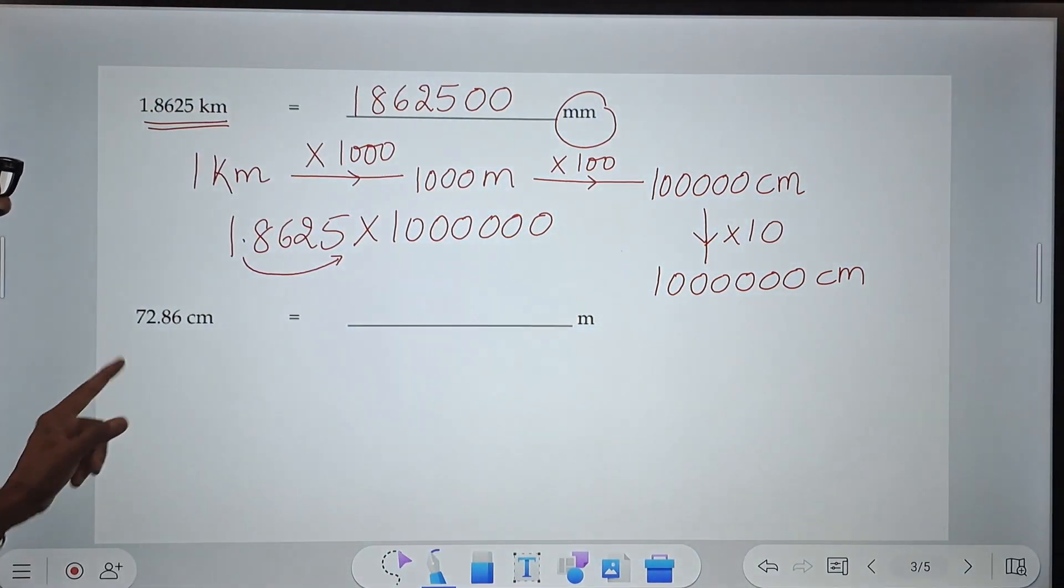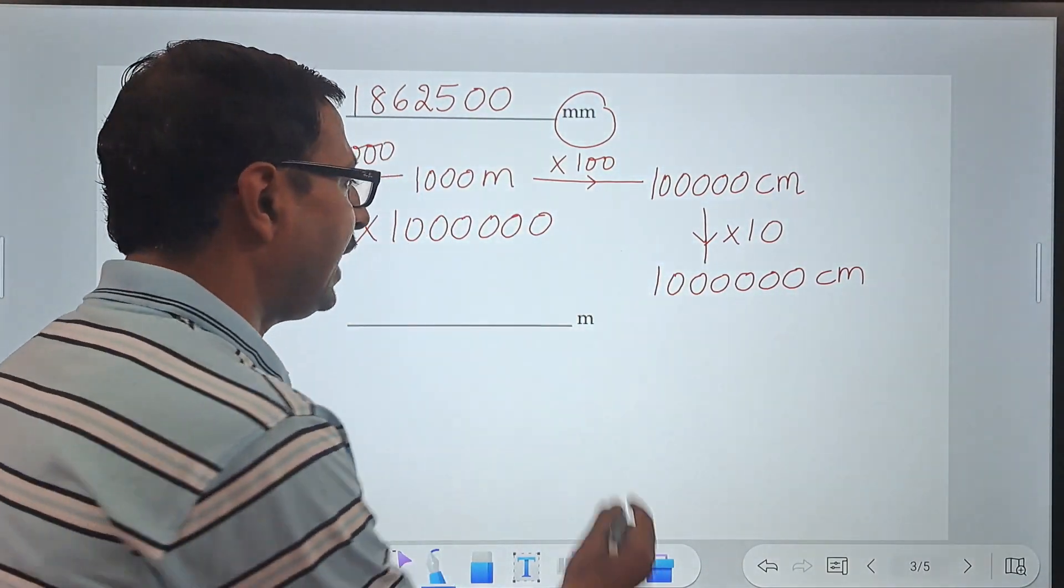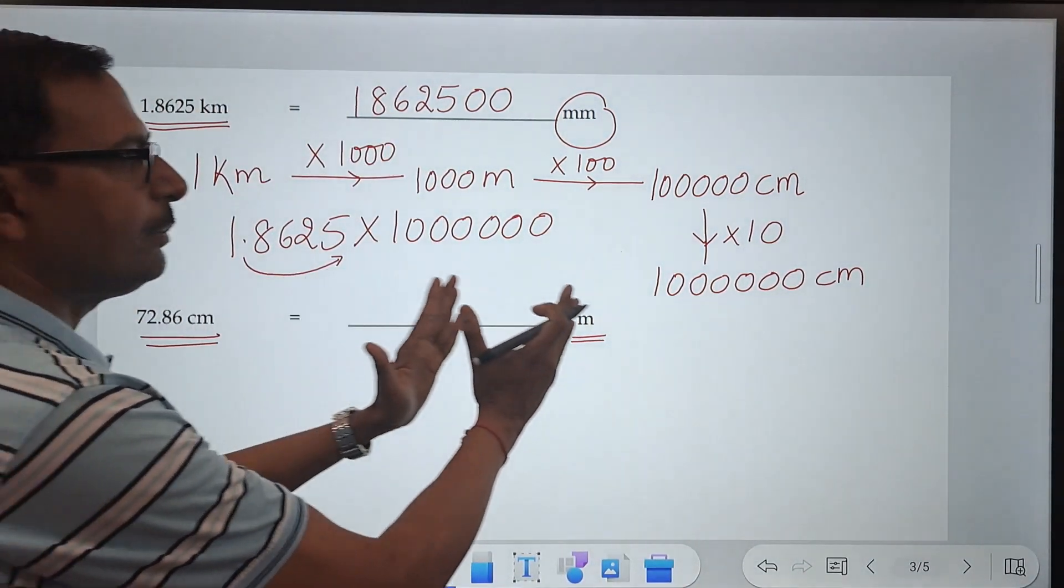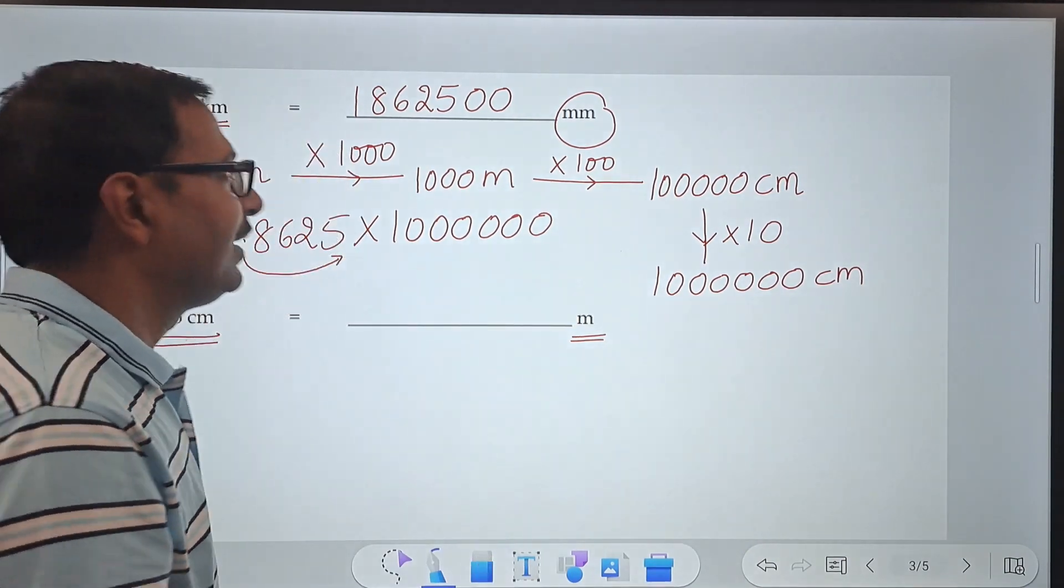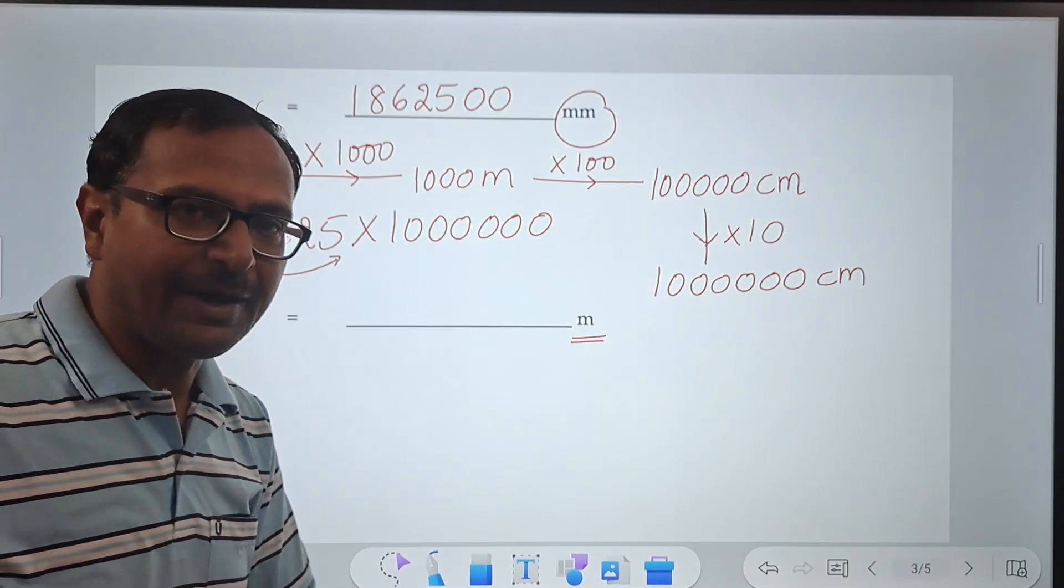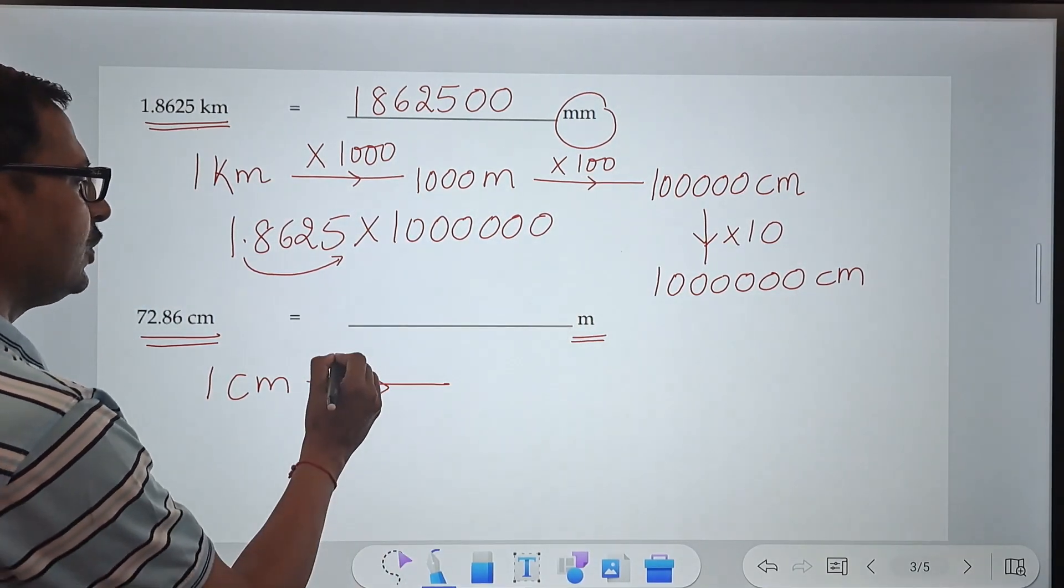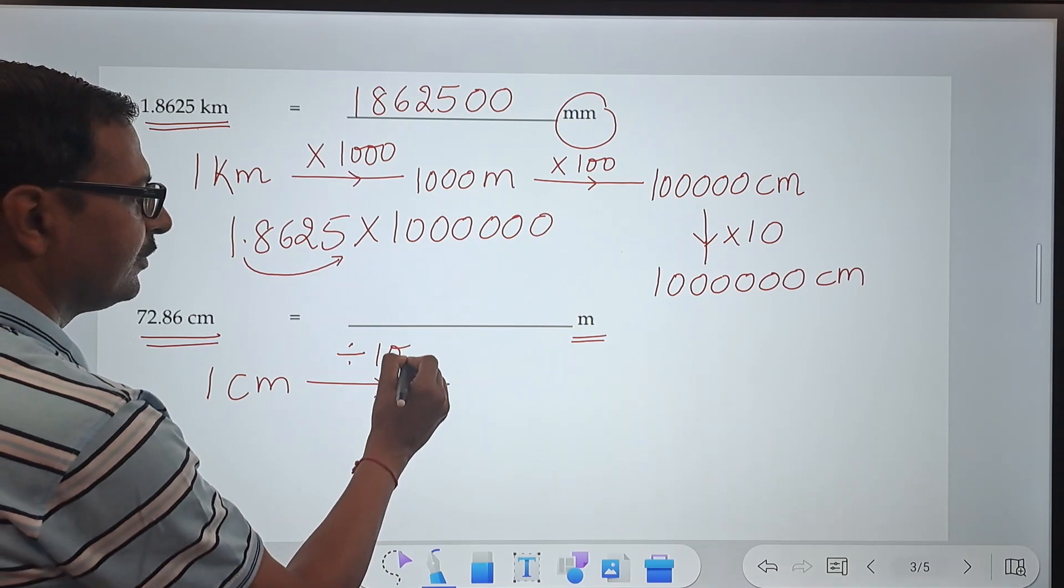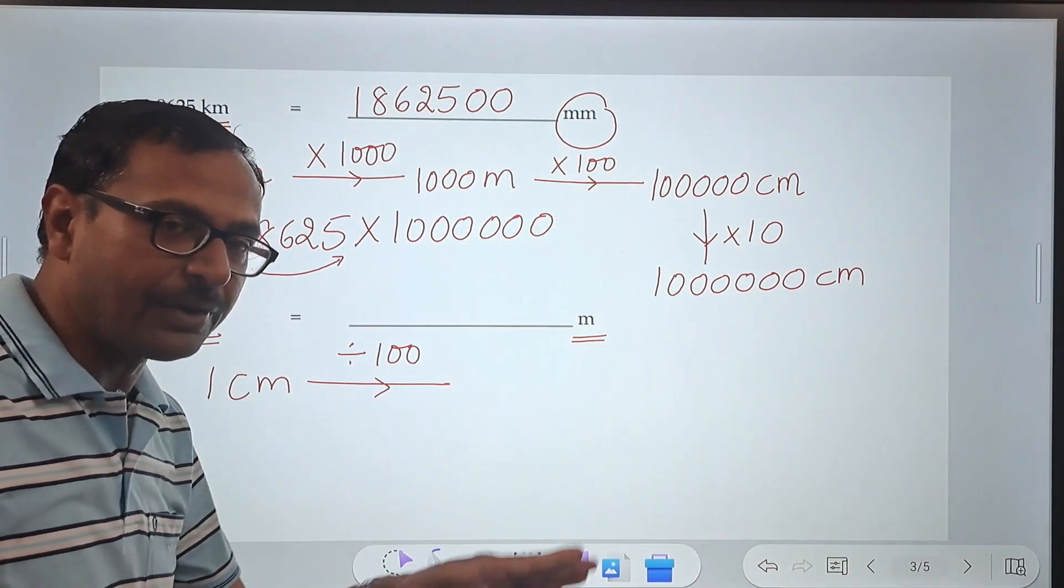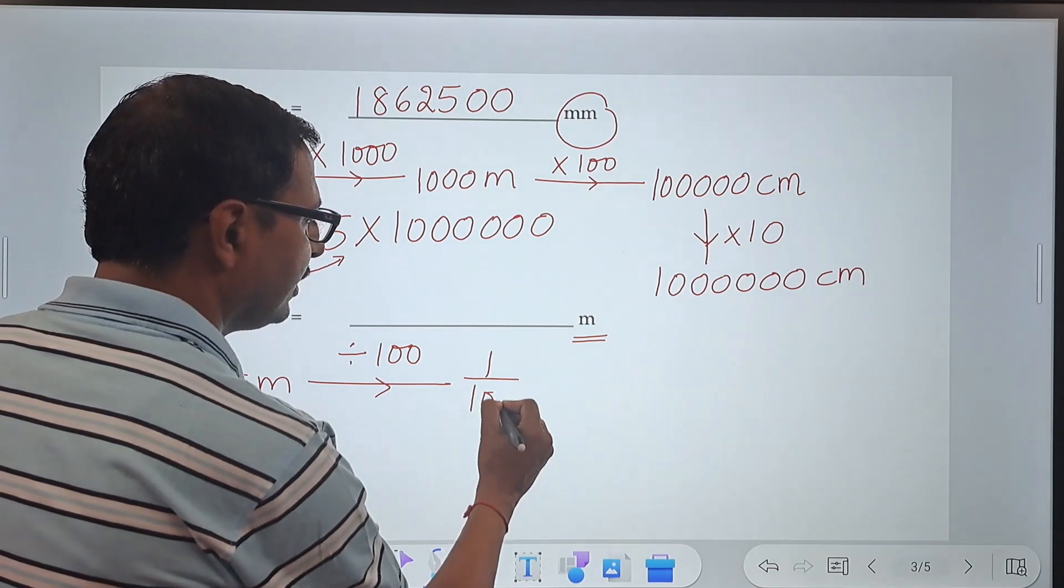Let's see another one like this. Here we have centimeters. Whenever you have centimeters—centimeter is a small unit and meter is a big unit—whenever you are converting a small unit to a big unit, then we divide. Big unit to small unit we multiply, small unit to big unit we divide. So if you want to convert one centimeter to meters, you have to divide by 100 because one meter has 100 centimeters. So one centimeter will have 1 upon 100 meters.